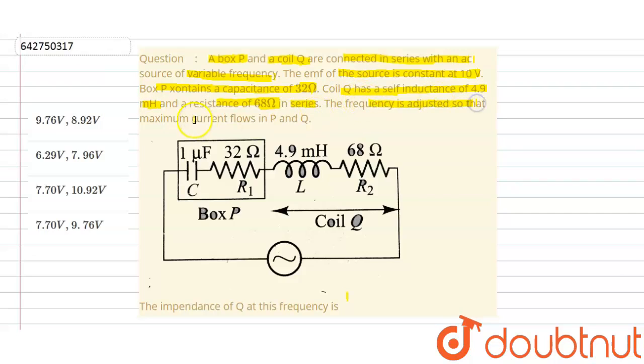The frequency is adjusted so that maximum current will flow. In that case, maximum current will flow in P and Q. We need to find the impedance of Q at that frequency. According to the statement, since there is maximum current flow, that means resonance will appear.